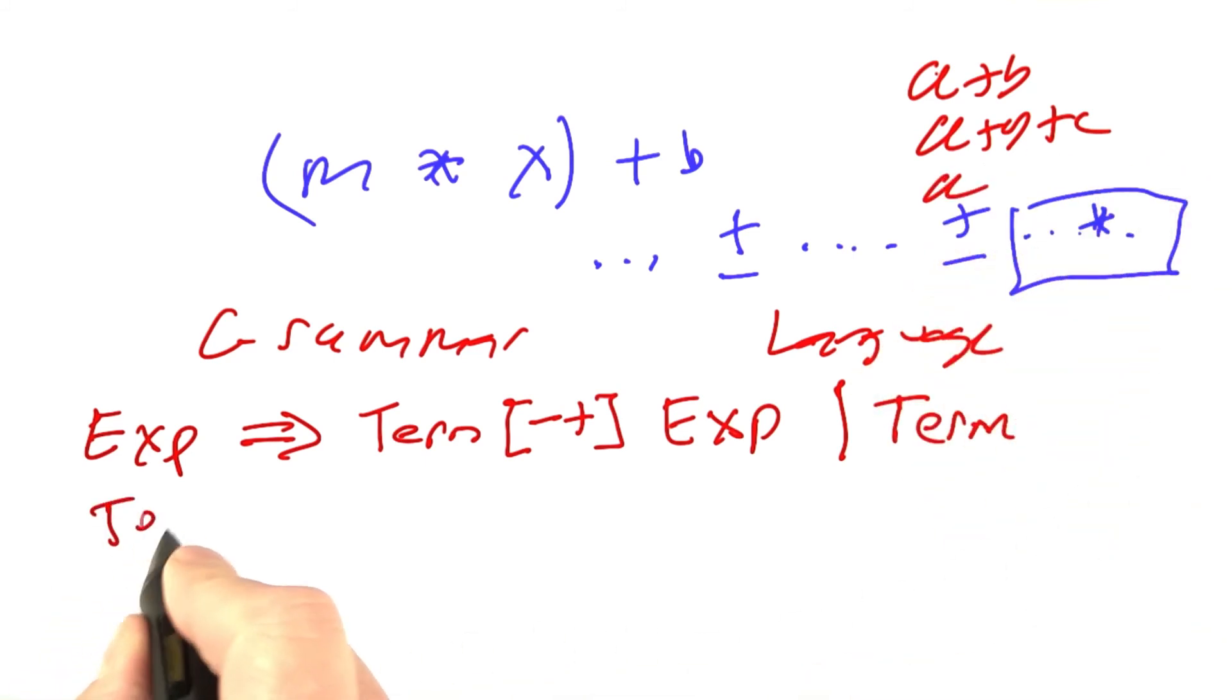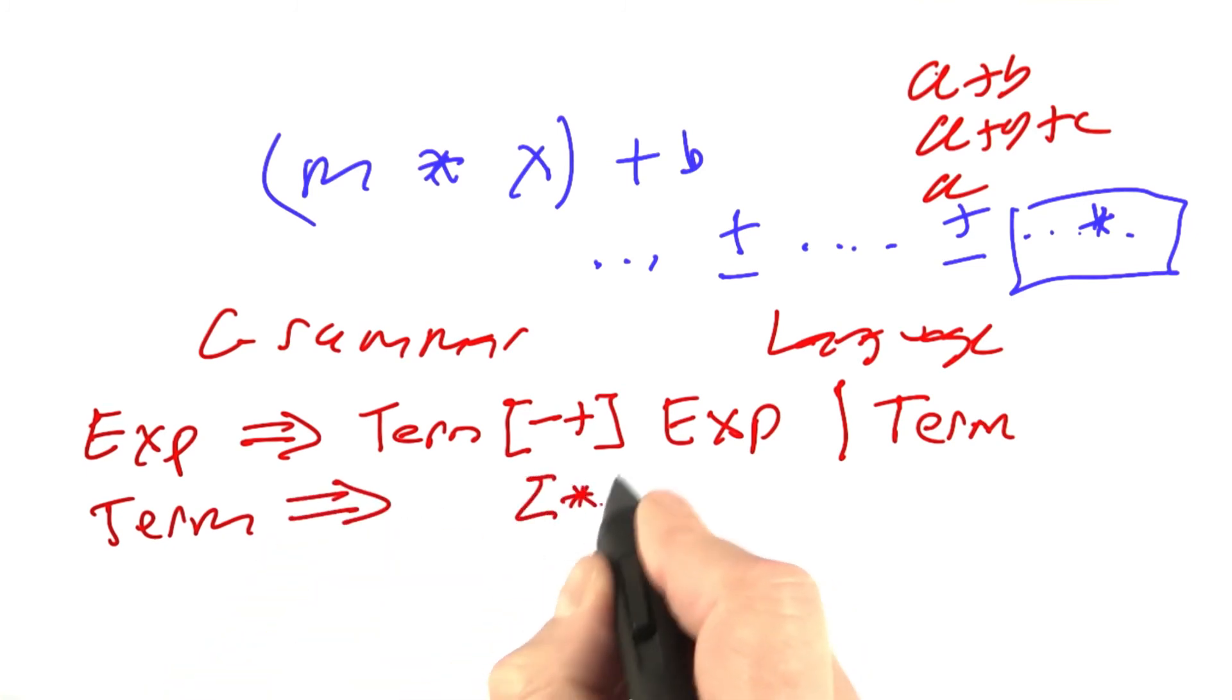Then I would write the rule for term. It would be similar. It would take into account the multiply and divide, and I would write the rest of the grammar in this format.